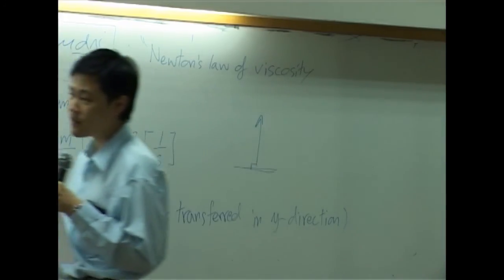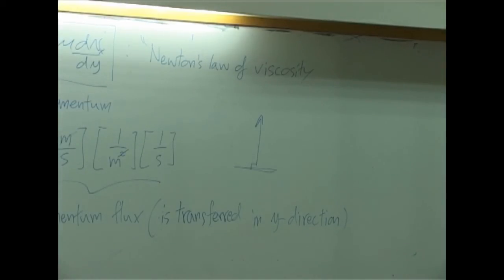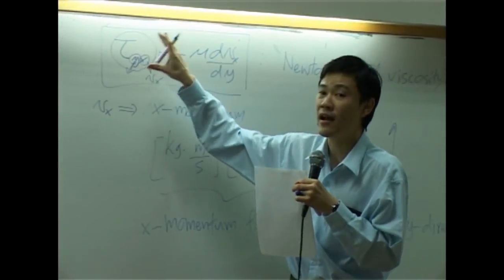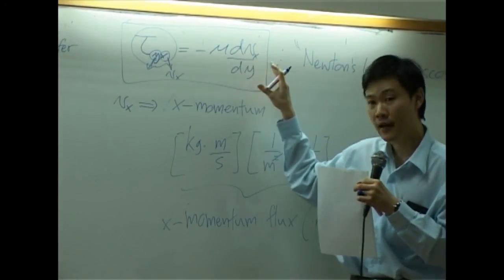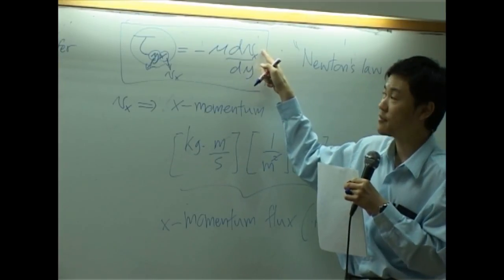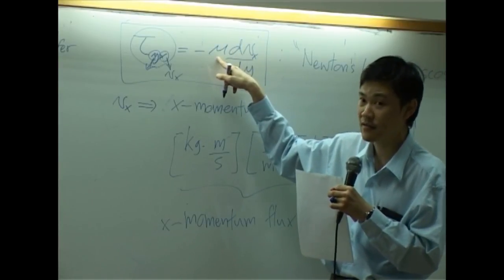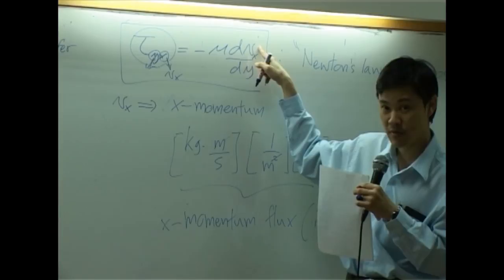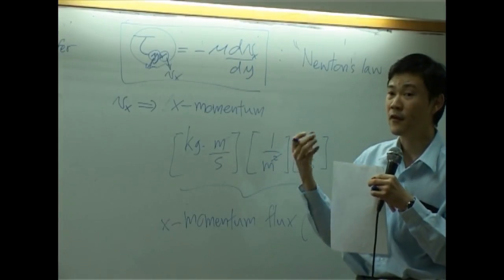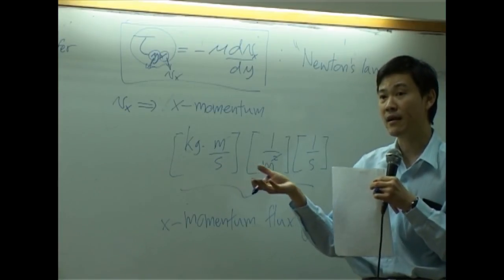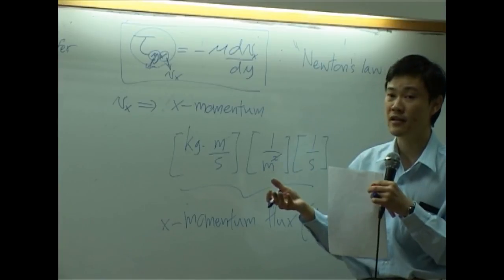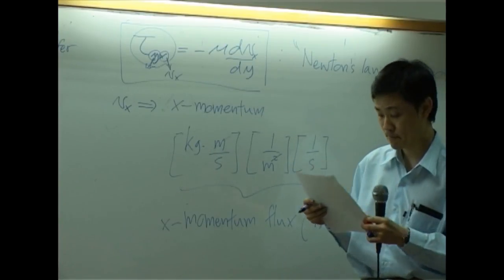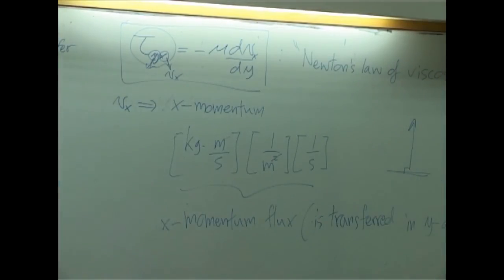Now let's talk about viscosity. According to the equation, if you have high viscosity, that means you need to put a lot of force in order to move the liquid and create velocity. If viscosity is high, tau is supposed to be a large number, while the velocity gradient can be a small number. That means for a viscous liquid, you need to apply a very great force to move the liquid. So sometimes viscosity is called resistance to flow.